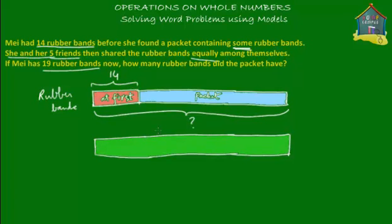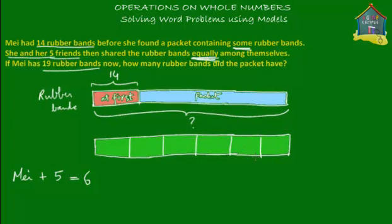What they did was they all divided the rubber bands equally among themselves. There is May — one person — and then there are five of her friends, so in all there are six people who shared the rubber bands. This whole total number of rubber bands was divided equally among six people: one, two, three, four, five, and six. Each little green box here is how much each person got after the sharing was done.